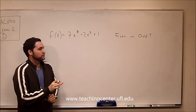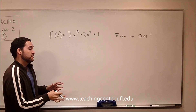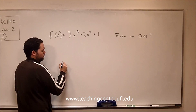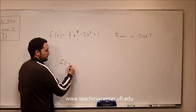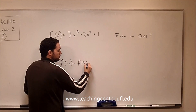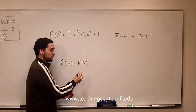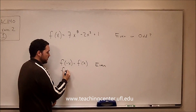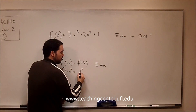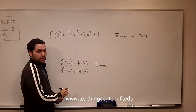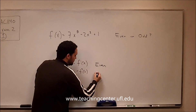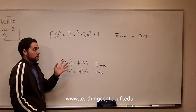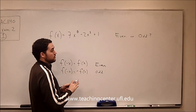There is a basic test to check if a function is either even or odd — it's the same exact test. All you need to do is plug negative x into the function. If you plug negative x in and get the original function back out, that's known as being even. If you get the original function back out but with a negative sign out front, that's known as being odd. And if it's neither of these, then the function is just neither — neither odd nor even.